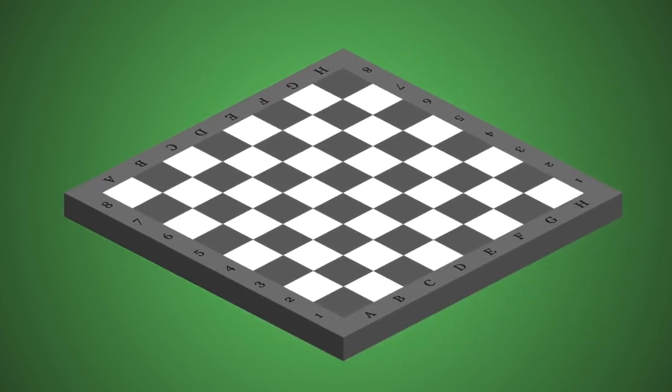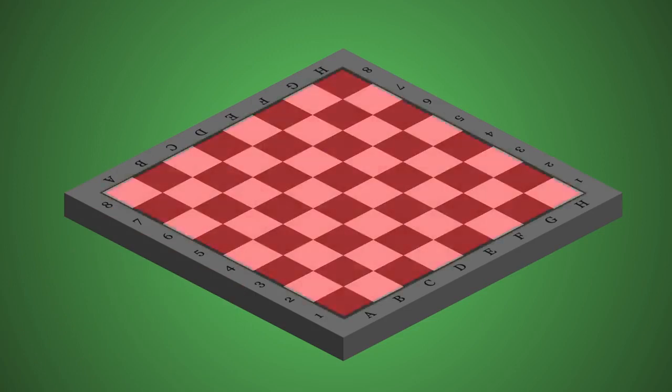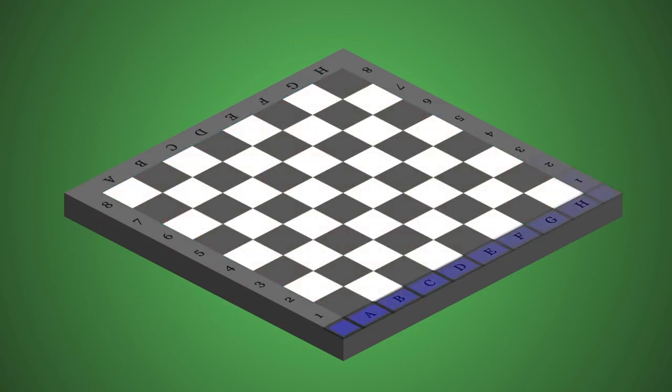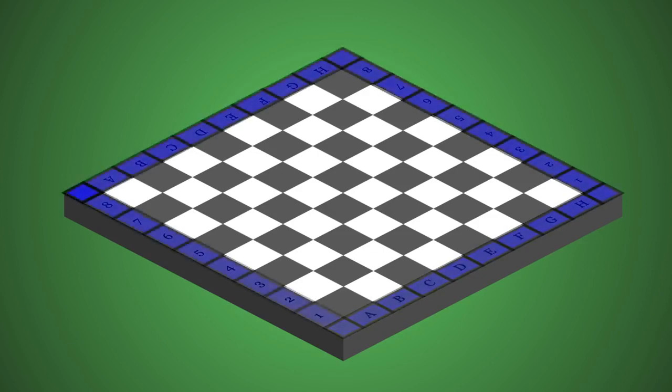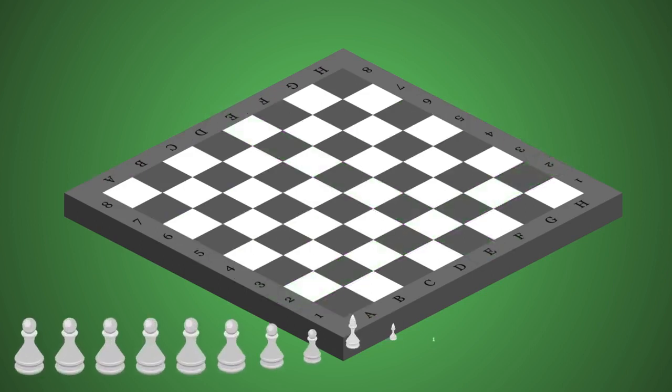A chessboard consists of 64 square spaces. There are files, which are the columns going up and down, pointing at you and your opponent and marked from A to H. And then there are ranks, the horizontal rows from 1 to 8. Each of the 64 spaces is identified by the combination of a letter of the file and a number of the rank.